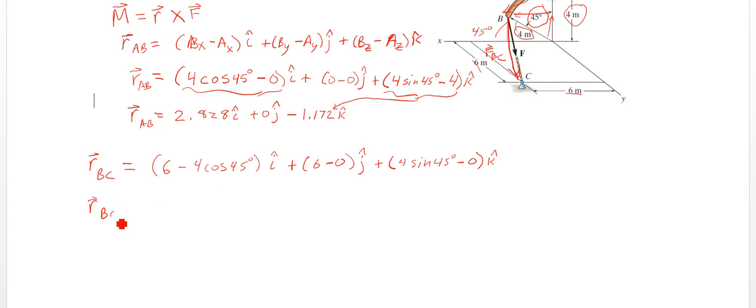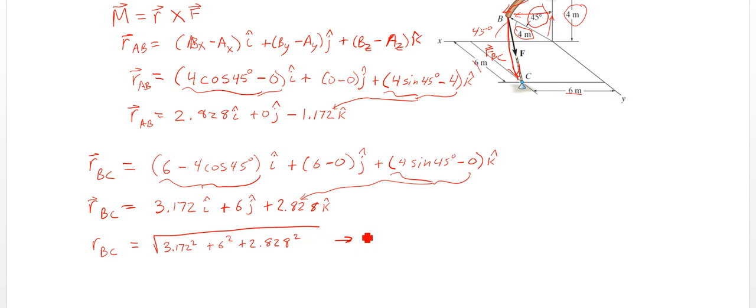RBC, then, will become this first part here. So RBC is going to be 3.172 i plus 6 j plus 2.828 k. So that's this section here. And then we'll also, we're going to need a unit vector for RBC. We'll find the square root of this thing here. So we're going to take each of those squared, the square root. And what does that go to? That goes to RBC. So that magnitude is 7.353.